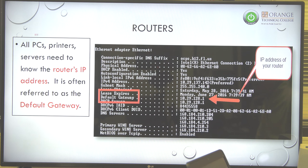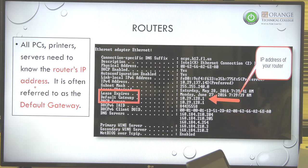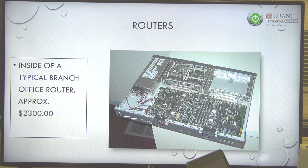All printers and all servers need to know the router's IP address. If they want to leave the local area network, they must have the router IP. What two pieces of IP information do you need to work on a LAN? Just the subnet mask and the IP address. If you want to leave that subnet and go somewhere else, you must also have a default gateway.